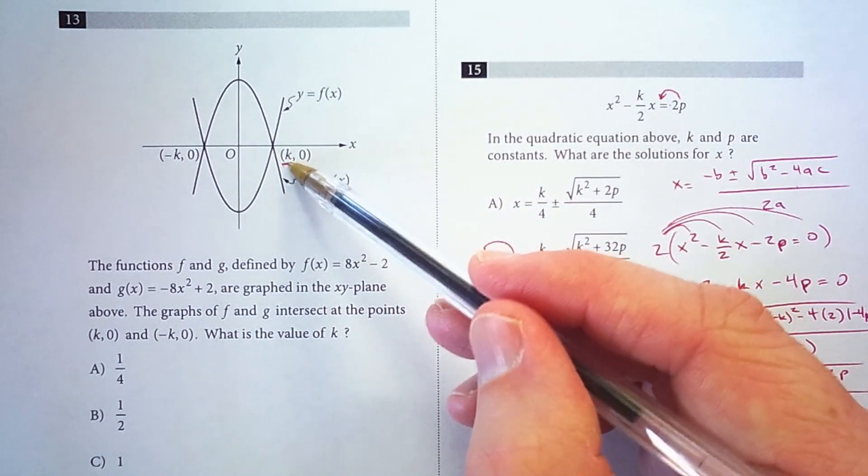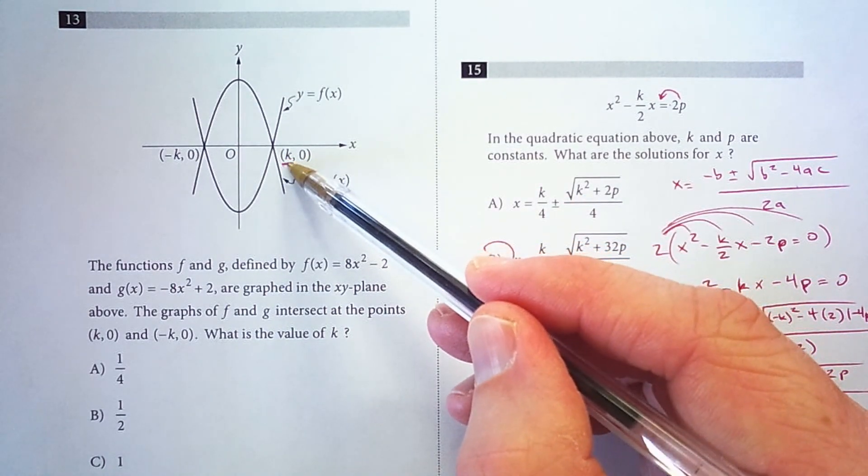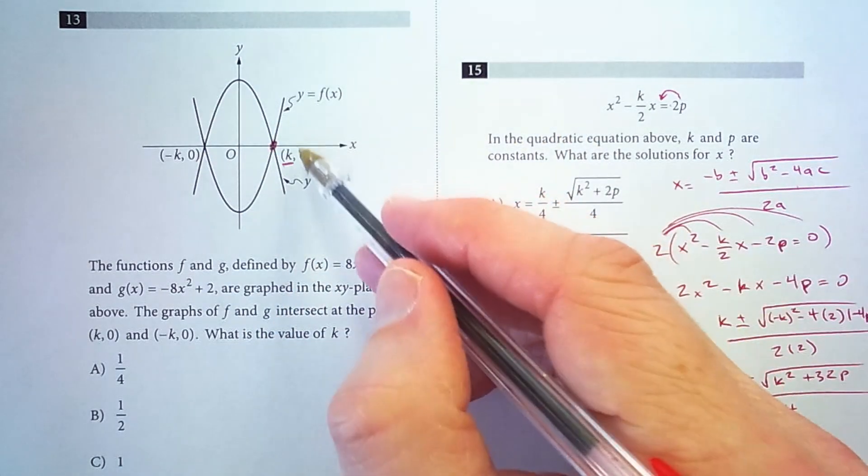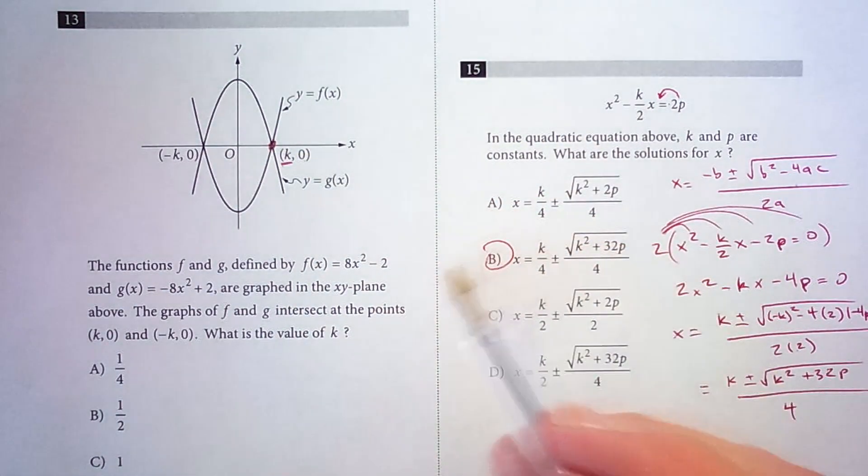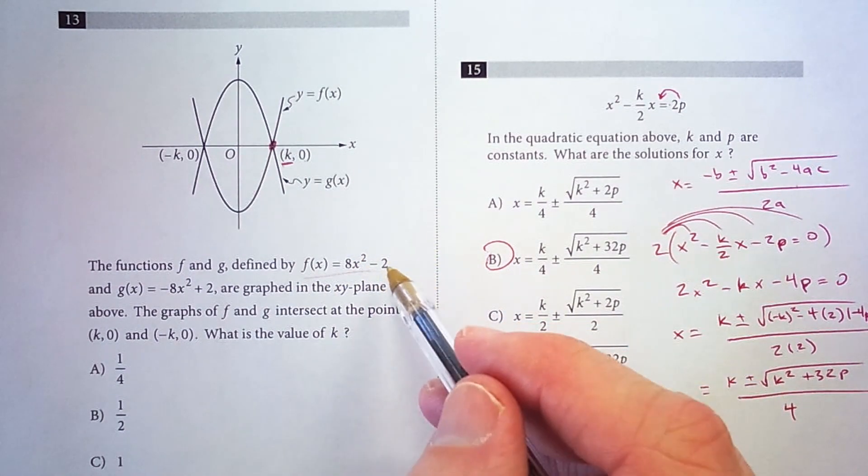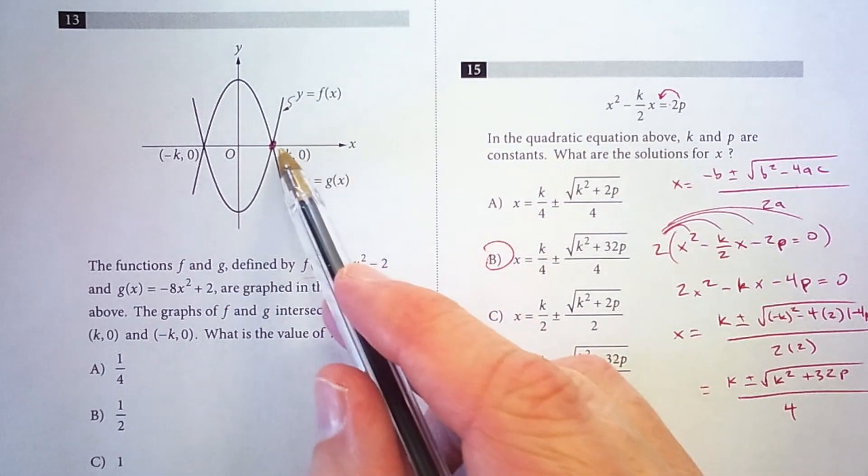So I want to know this value right here for k, which happens to be the x-value at this x-intercept where y is 0. So what I'm going to do is for this function f(x), I'm going to find the x-value at the x-intercept.